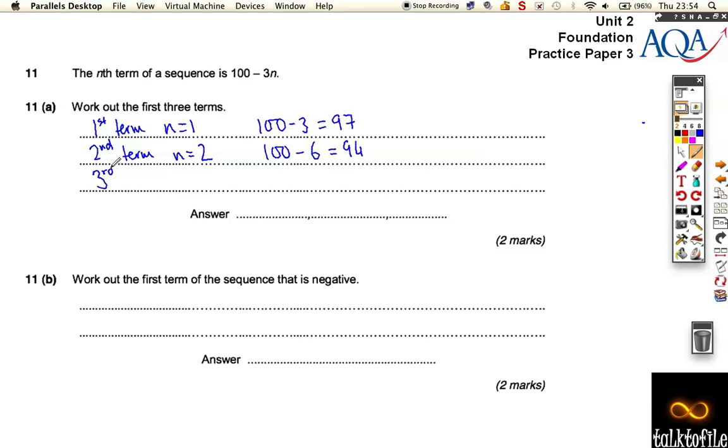And to work out the third term, we take n to be 3. If we take n to be 3, we've got 100 minus 3 lots of 3 is 9. So that becomes 91.